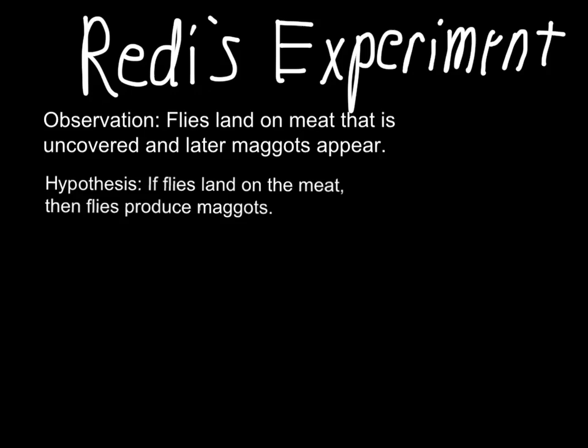His experiment is a nice one to talk about because it's very simple — one that you can already pretty much predict the outcome of. You'll probably be amazed that it was even considered science at his time. His observations were that if flies land on meat that's uncovered, maggots will later appear. He's connecting those two things together, saying he thinks that flies are causing the maggots. So his hypothesis is: if flies land on the meat, then flies produce maggots.